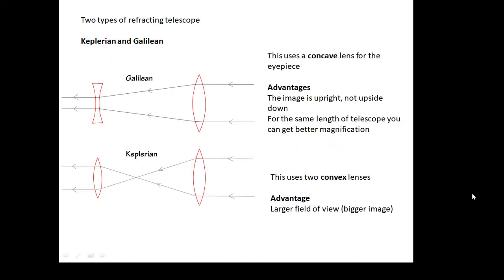But refracting telescopes, we need to know that there's two types. There's a Keplerian, named after Kepler, and a Galilean, named after Galileo. And you won't be asked to draw detailed ray diagrams of these, but you may have to recognise them. And if you look at them, can you see what the big differences between them are? The biggest difference is that the Galilean telescope, the eyepiece lens, is concave. Whereas with the Keplerian telescope, the eyepiece lens is convex. So the Galilean telescope uses a concave lens for the eyepiece.